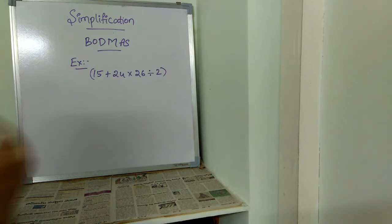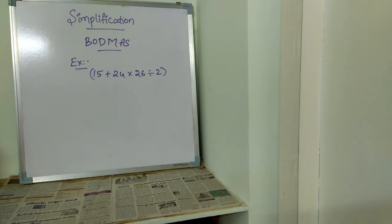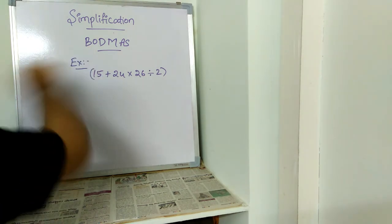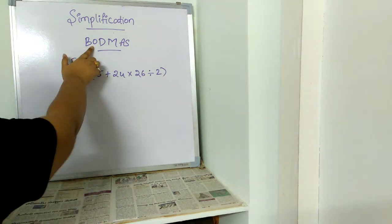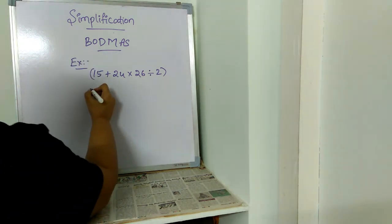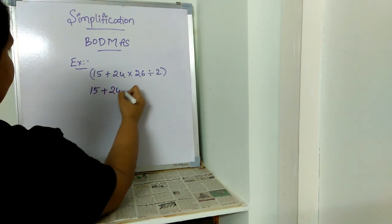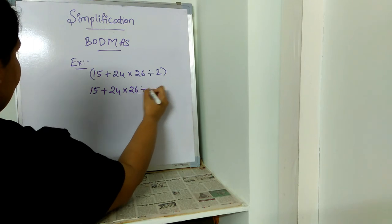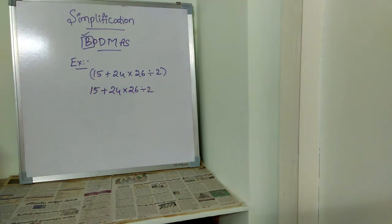First, see this equation has all the symbols. It has braces, division, multiplication, everything. So in this sequence we need to solve this problem. First is braces. We should remove brackets. Brackets is also called braces. We have removed the braces.